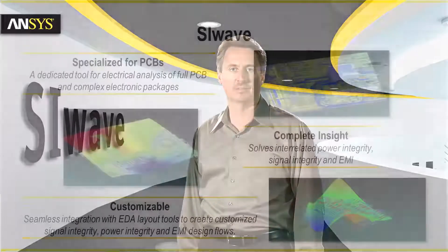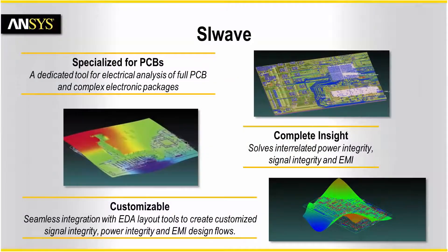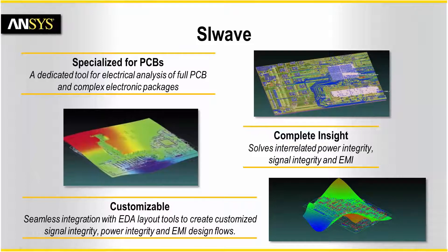For the next couple of minutes, I'll give you an overview of ANSYS SI-WAVE, a specialized electromagnetic field solver for printed circuit boards and IC packages. SI-WAVE's hybrid solution provides complete insight into power integrity, signal integrity, and EMI by combining effects of power and ground paths, transmission lines, package and PCB resonances, and radiation. It can be customized into your design flow with seamless integration with popular EDA layout tools and file formats.